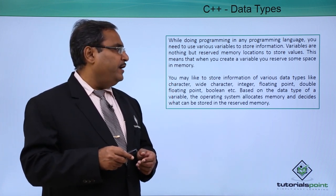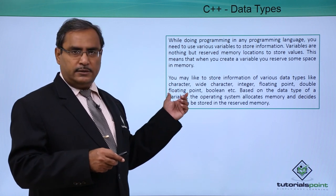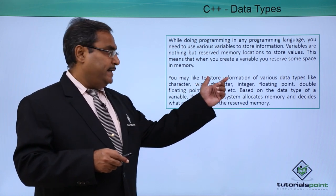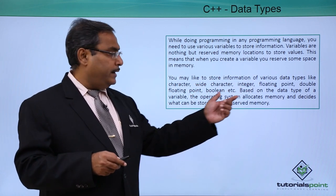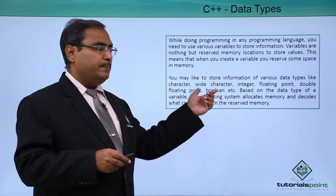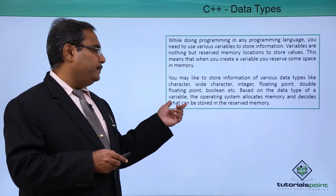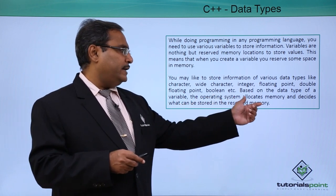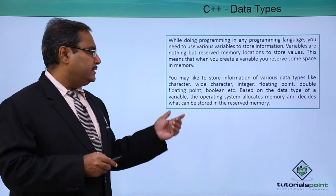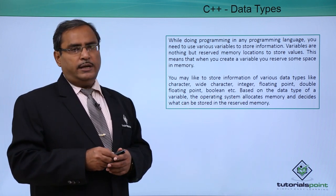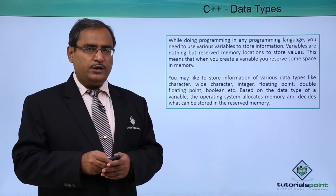You may like to store information of various data types like character, wide character, integer, floating point, double floating point, boolean, etcetera. Based on the data type of a variable, the operating system allocates memory and decides what can be stored in that reserved memory location.